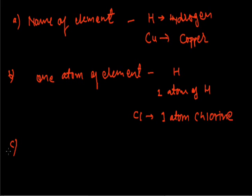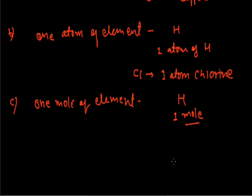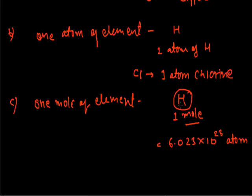The third significance of a symbol is that it represents one mole of the element. For example, if we write H, we can say there is one mole of hydrogen. We know that one mole equals 6.023 × 10²³ atoms, so this symbol represents that many atoms of that element.